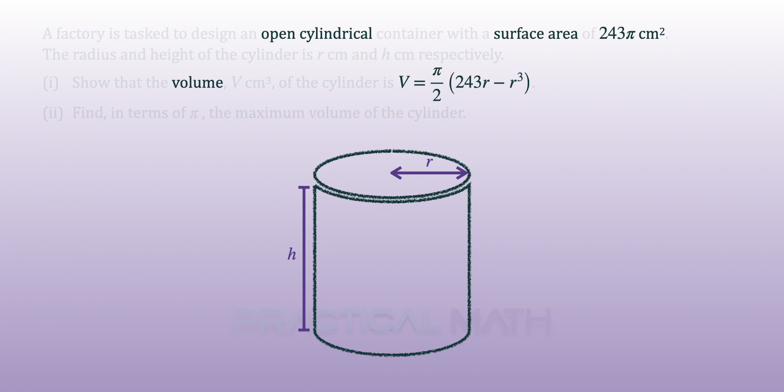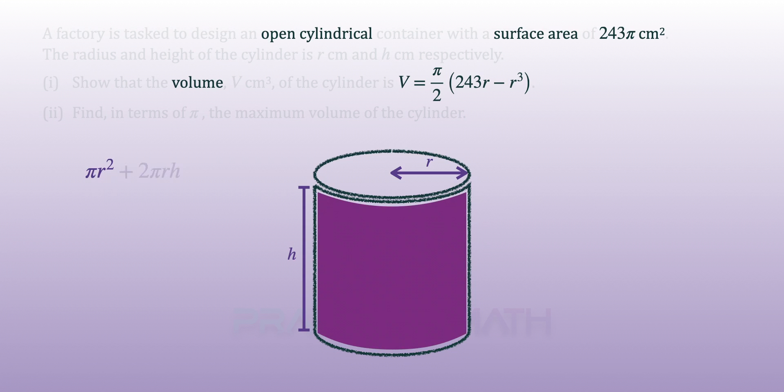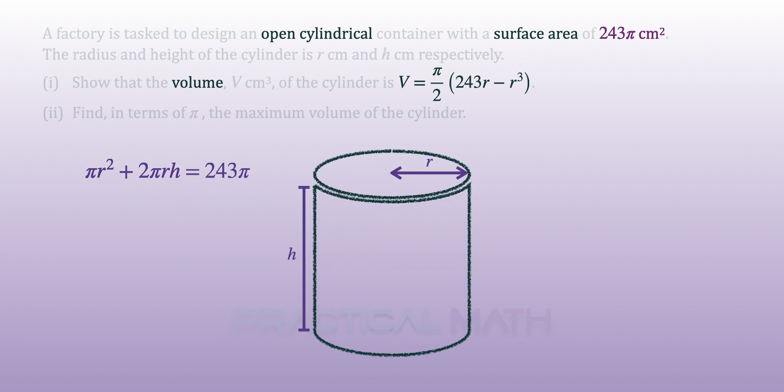Let's begin by forming an equation for the surface area. The base area of the open cylinder will be πr², and we add 2πrh for the curved surface area. We will now form an equation by equating it to 243π from the question. Dividing by π throughout, we are able to simplify the equation into r² + 2rh = 243.